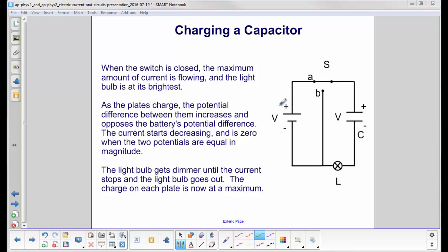A way to look at that, this will generate a current going in this direction, the capacitor would generate an opposing current. Therefore, the net current in the circuit starts decreasing, and will eventually be zero when the magnitude of the two potentials are equal. Therefore, the light bulb will get dimmer and dimmer until the current stops and the light bulb goes out. The charge on each one of these plates now is at its maximum.